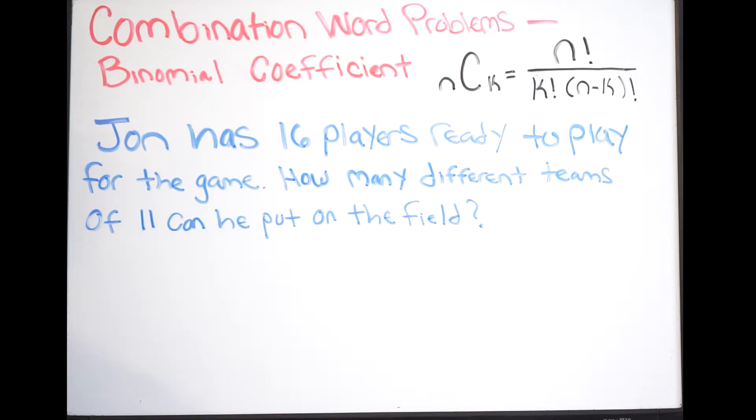It says John has 16 players ready to play for the game. How many different teams of 11 can he put on the field? So in this particular example we have to define what's our n and what's our k. In this case n is going to be the total number of players, that's going to be 16.